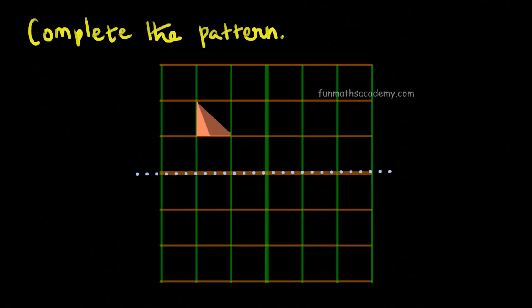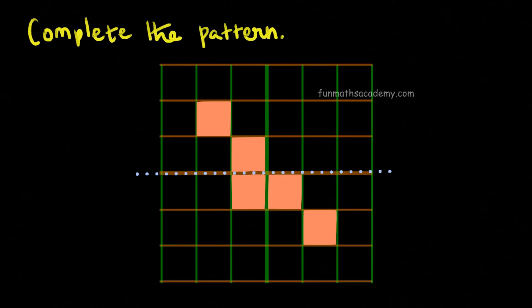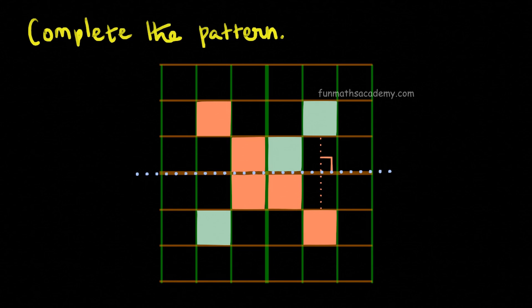Sometimes, you will be given line of symmetry and square grids and you will be asked to complete the pattern using minimum number of squares. Just like how we mark corners there, here you will shade squares on the grid at the same distance from the mirror line.